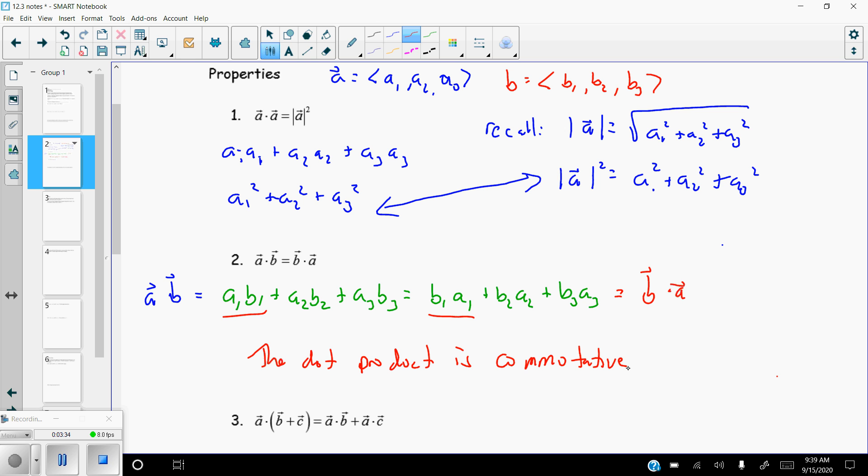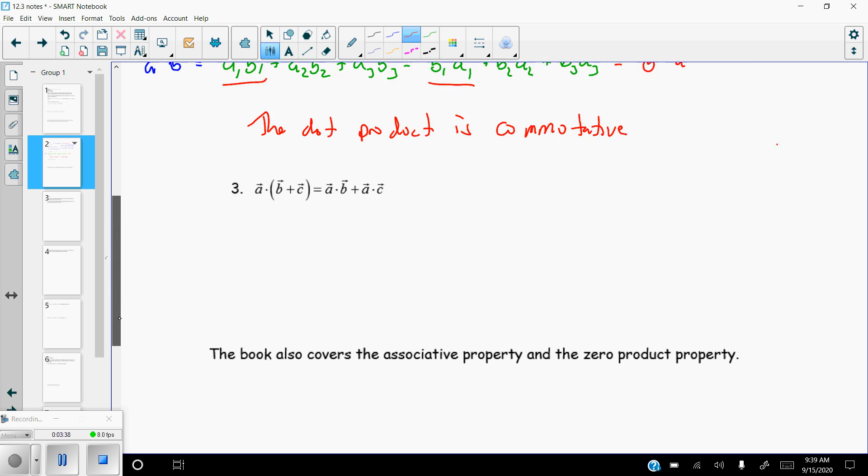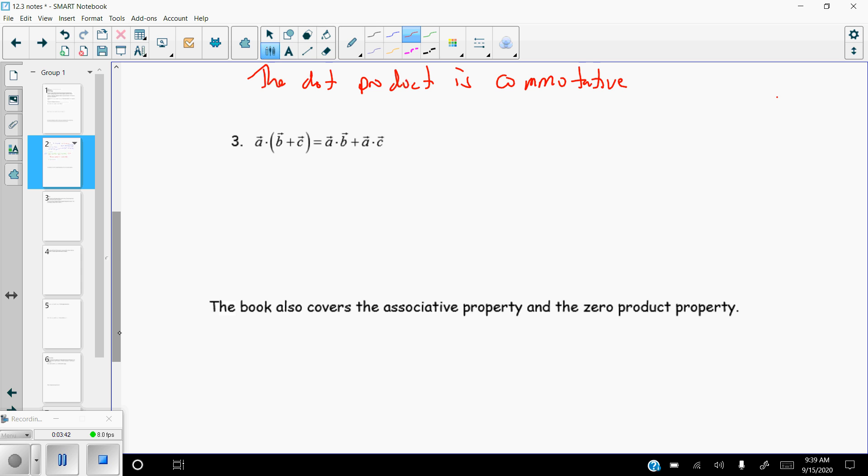Alright, and we're going to do one more. We're going to do a dot the quantity of b plus c, and that's supposed to equal a·b plus a·c. So c is just going to be defined as c1, c2, c3. I'm just not going to write that part down right there, but that's what it is. So what we have is a1, a2, a3 dotted with b plus c, which is going to be another vector. I'm just adding two vectors together, so b plus c is b1 plus c1, b2 plus c2, b3 plus c3.